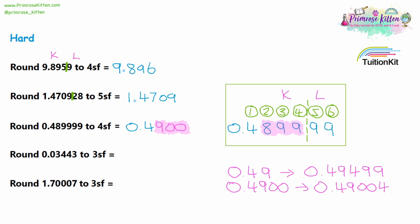For question four, it's three significant figures. The most significant figure is the three hundredths, so we rule off after our first three non-zero digits. Our answer is going to be 0.034. The first number we're losing is a three, so we are not rounding up. I'm safe to write down the four, and I've written three non-zero digits for three significant figures.